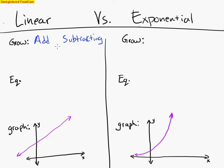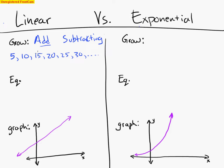So a real simple linear sequence: I could start off with 5 and every single time I'm just going to add 5. So 5 turns into 10, 10 turns into 15, 15 turns into 20, then 25. Every single time I'm adding 5 to my previous term. So I'm growing, but I'm growing by adding. I can also do it with subtracting, and then I would be decreasing.